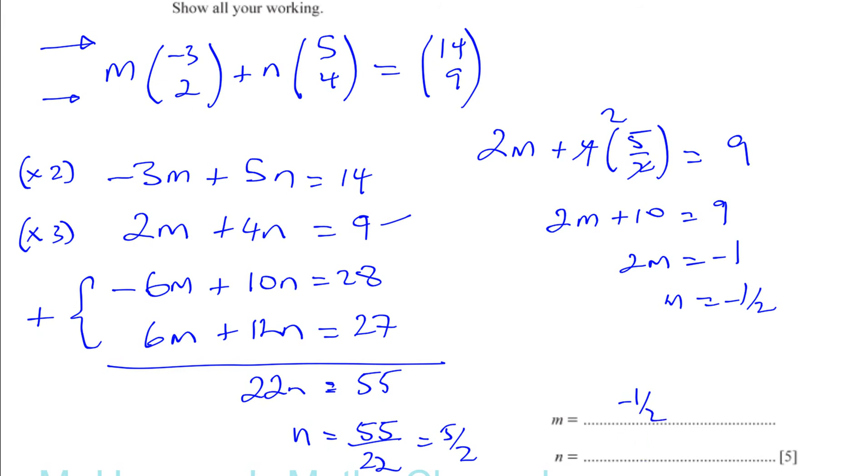And we can check that that works. If we have minus 1 half times minus 3, you're going to have 3 over 2. And then you're going to have 5 times 5 over 2, which is 25 over 2. That gives you 28 over 2, which is 14. So it works for that one. And you have 2 times m, so 2 times minus 1 half, which is minus 1. Plus, and you're going to have 4 times n, 4 times 5 over 2, which is 2 times 5, which is 10. And that gives you 9. So we know that these two numbers solve the equation. So that's the answer for part A.